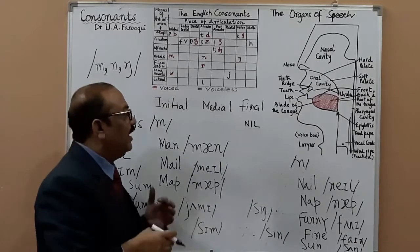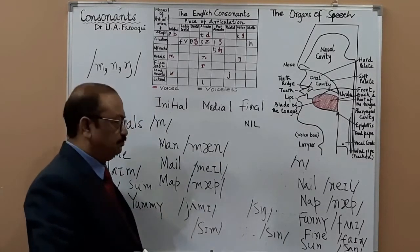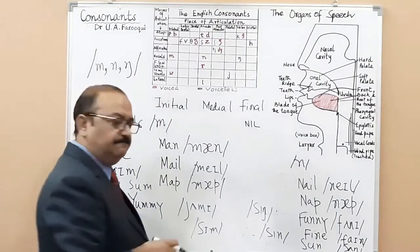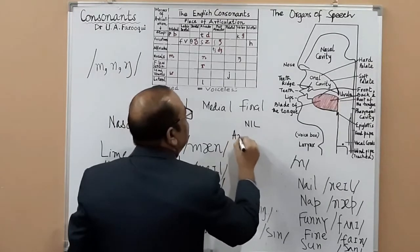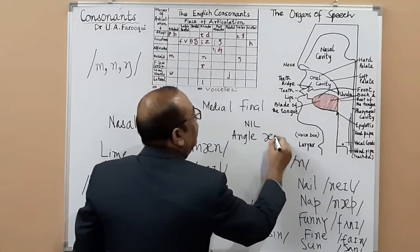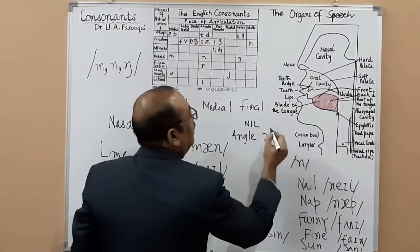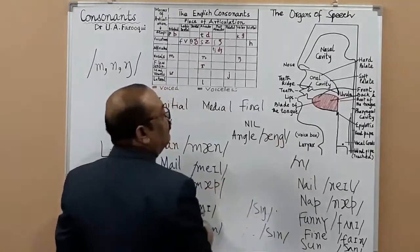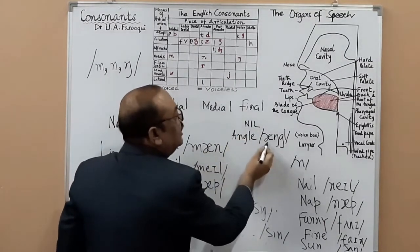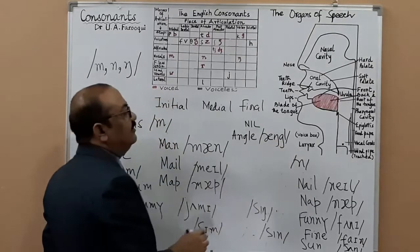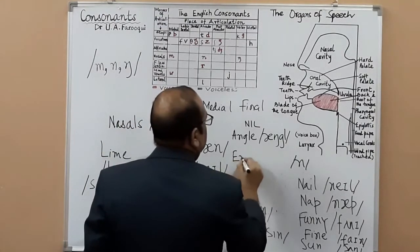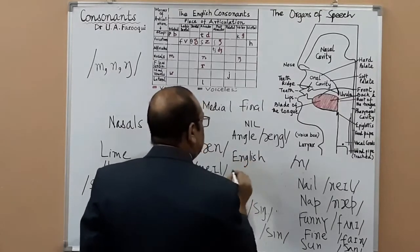Medially you have 'single', 'angle', 'mingle' — so many words. Let's take 'angle'. You write: angle, triangle — this is how you transcribe it. And the /ŋ/ sound in 'angle' — yes, fine.